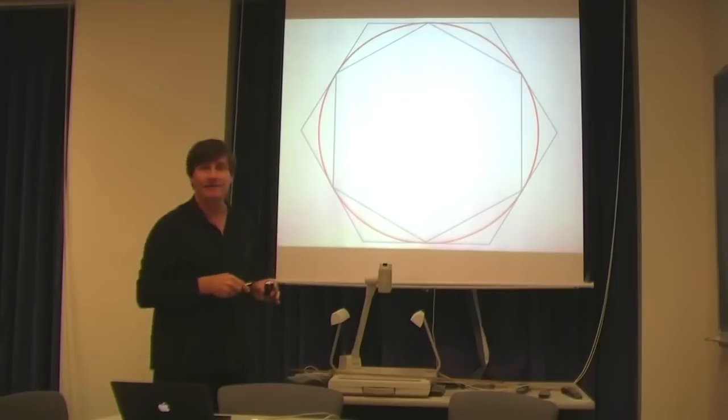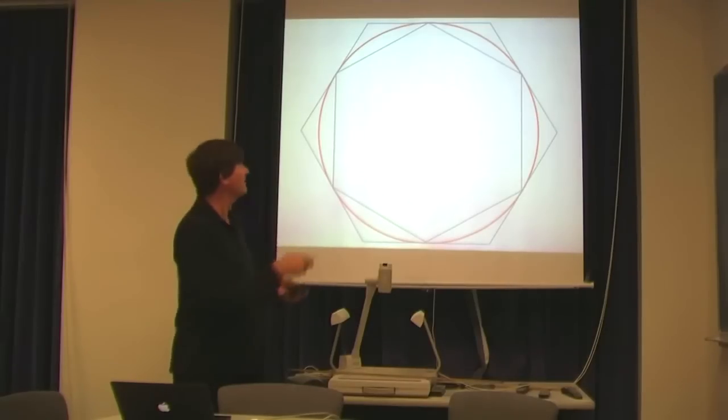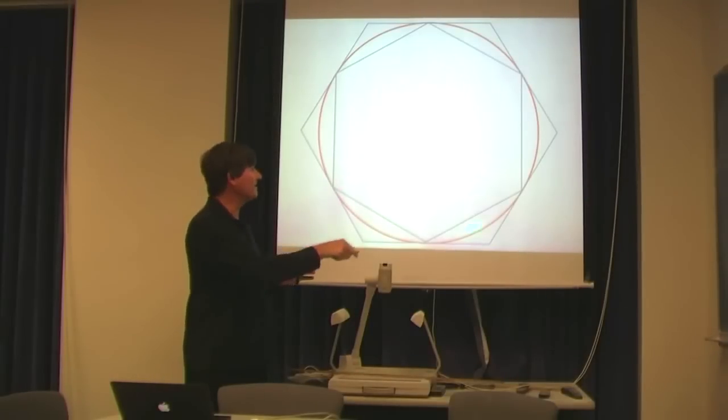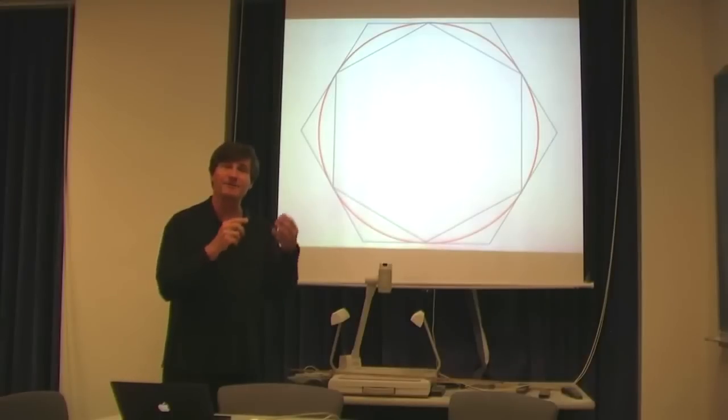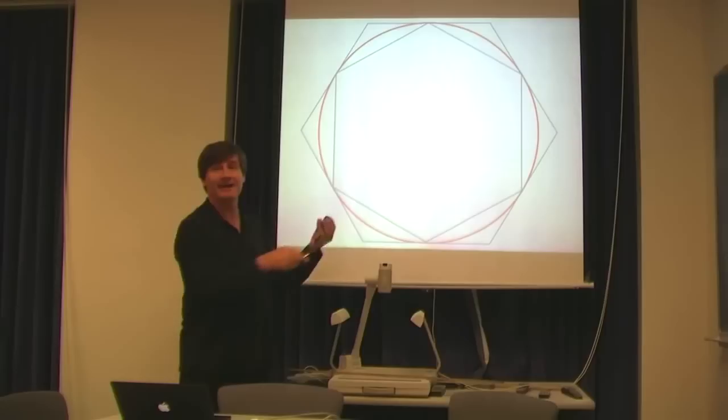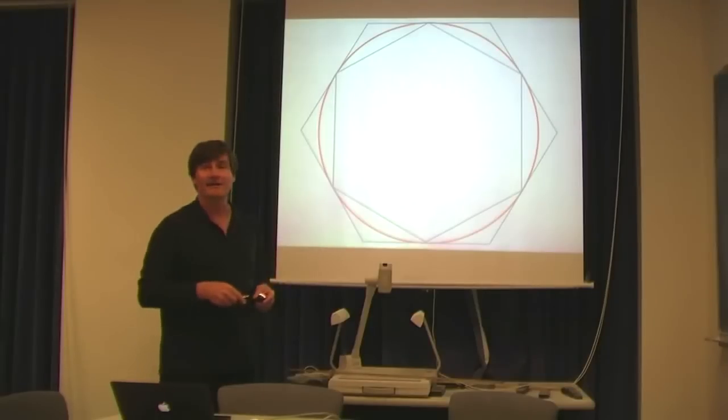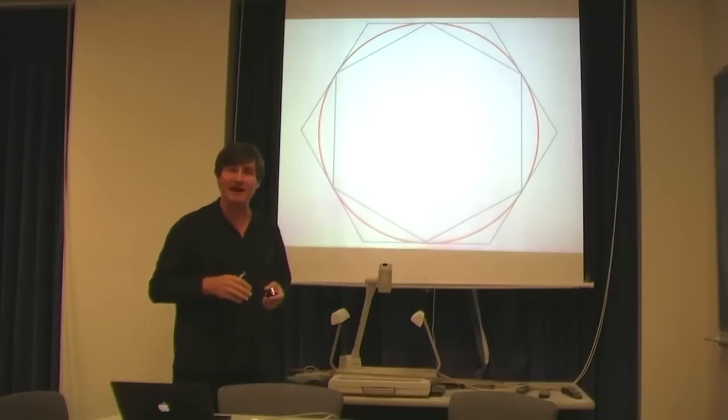Now draw another polygon with the same number n sides—here I use 6, a hexagon again—outside the circle such that the sides barely touch the circle. Calculate the perimeter of that hexagon. The true circumference of the circle will be between the two perimeters, the inside hexagon perimeter and the outside hexagon perimeter. In this case, with the hexagon, the two perimeters don't approximate the circumference very accurately. But as you increase n, the number of sides of the polygon, the approximation becomes more accurate.